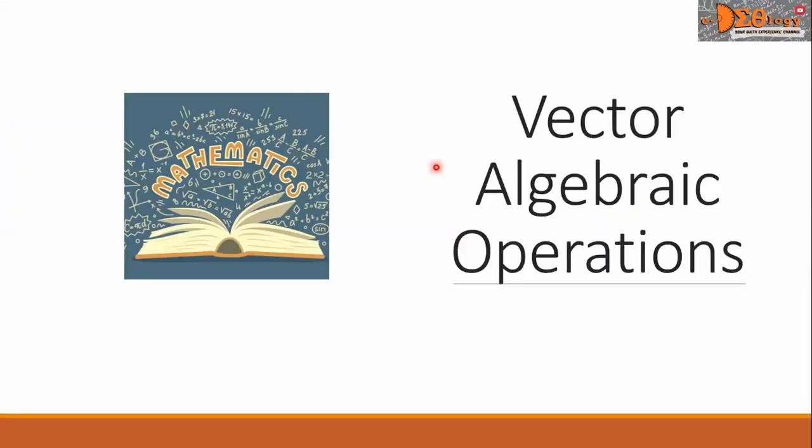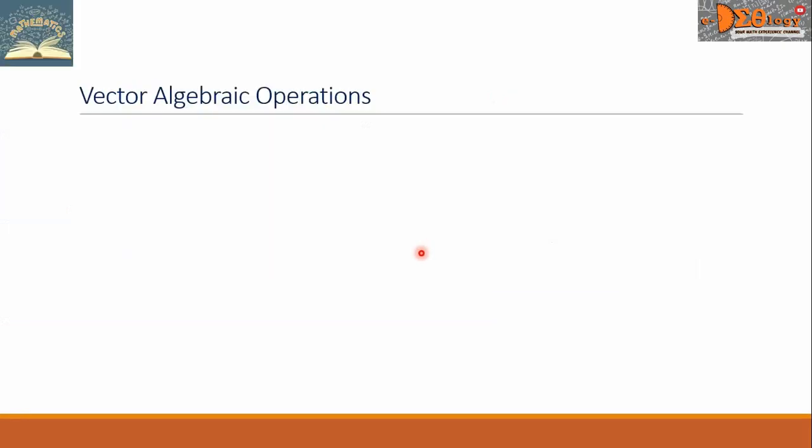Hi, everyone. Today, we're going to study vector algebraic operations. Let V be a vector represented by V equals xi plus yj plus zk. Or we can represent it this way: V equals xyz.